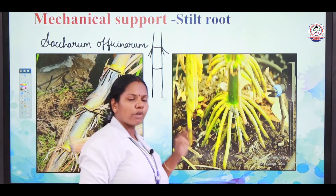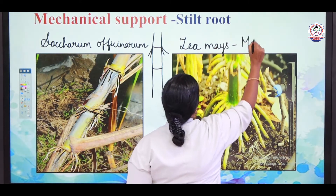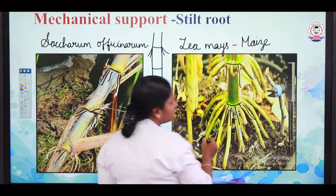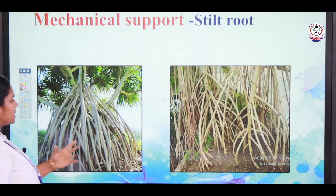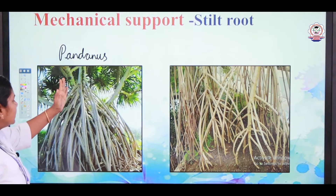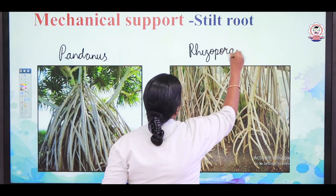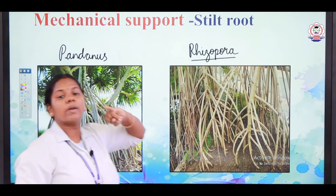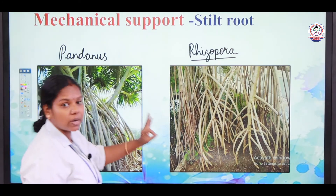Another example of stilt roots is zeemace — the maize plant. In maize also, many roots arise from the nodes and they give additional support to the plant. The four examples of stilt roots are: first, sugarcane (Saccharum officinarum); second, maize; third, pandanus; and fourth, rhizopora, which is mainly found in the mangrove forest.